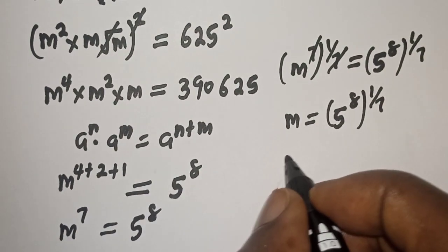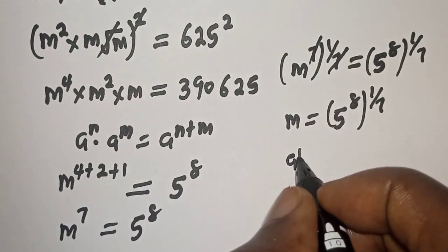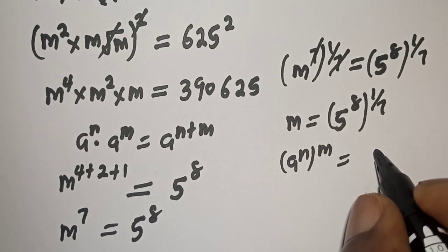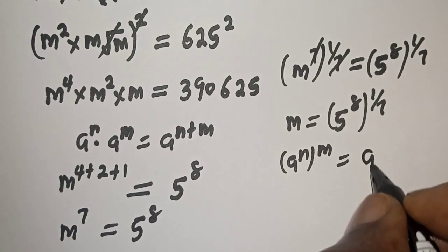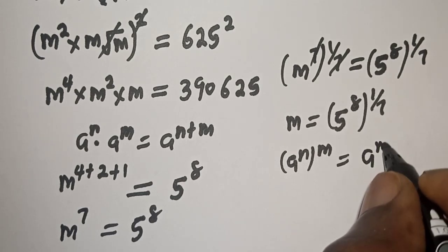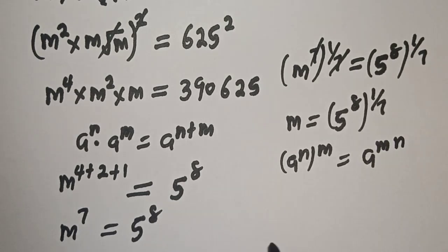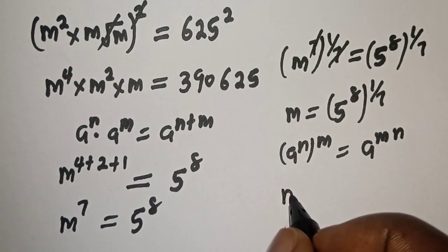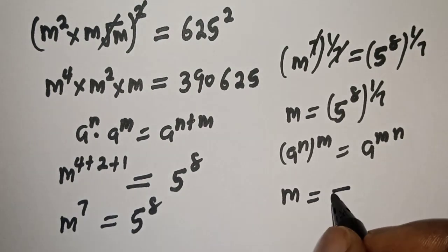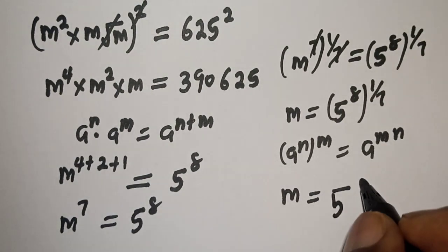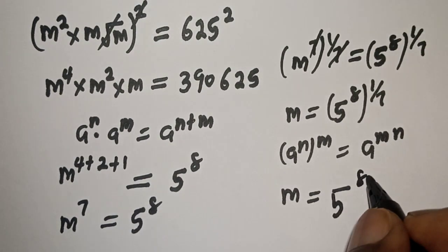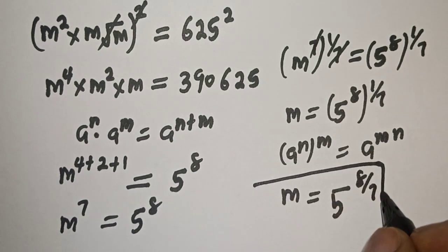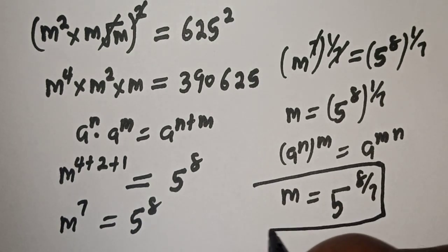Remember that a raised to power n, to the power of m, is equal to a raised to power m times n. Therefore m is equal to 5 raised to power 8 over 7. This is the final answer.